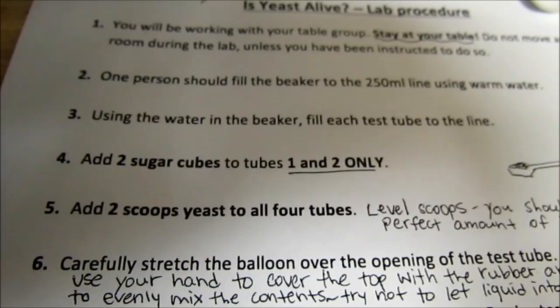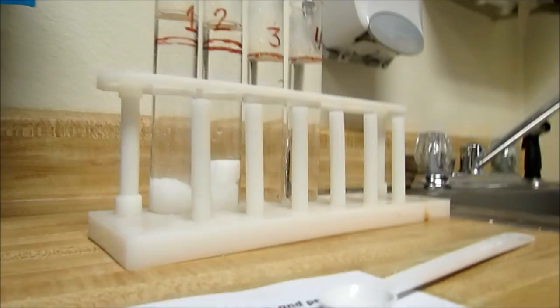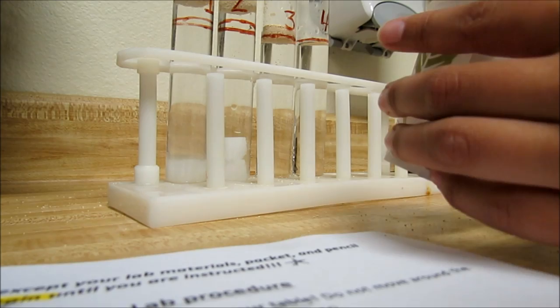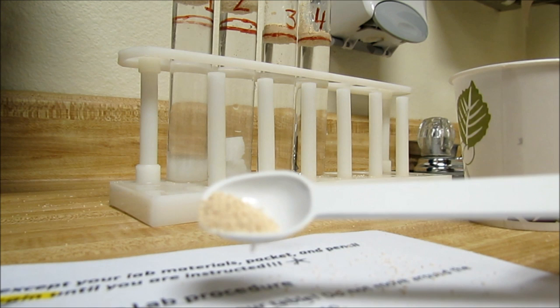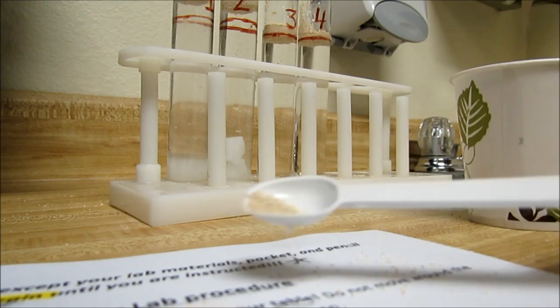Next, it says I should add two scoops of yeast to all four tubes, and I'll be adding nice level scoops, not piled on scoops. So I'm going to go ahead and do that. So, there's a look at what the yeast looks like before we put it in, so you can just see it's little tiny brown grains.